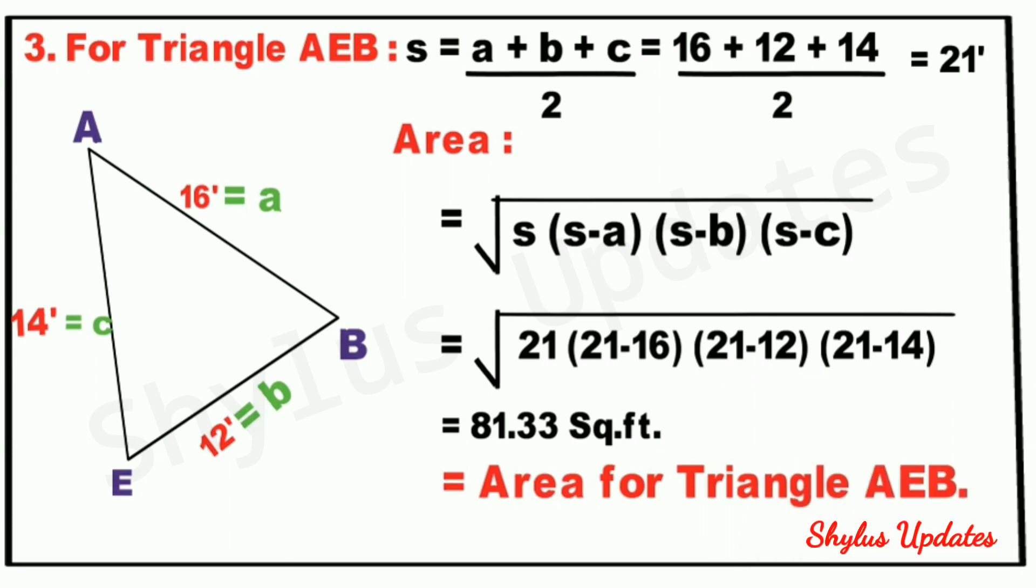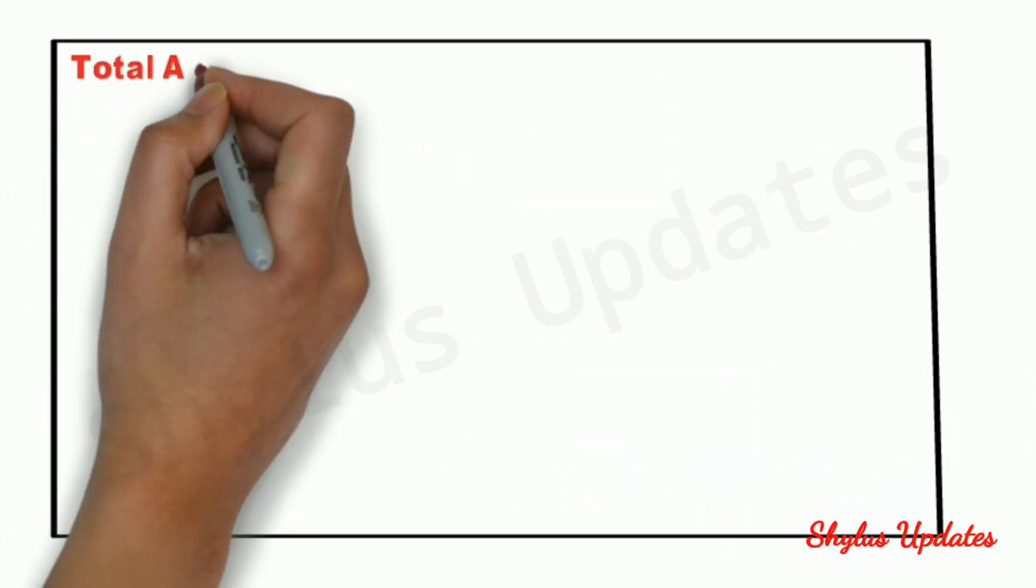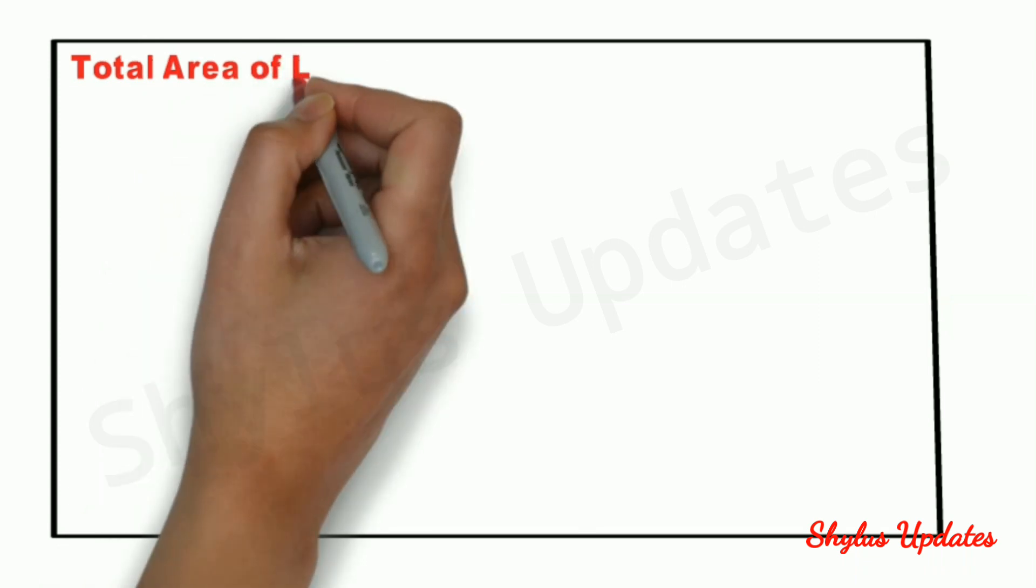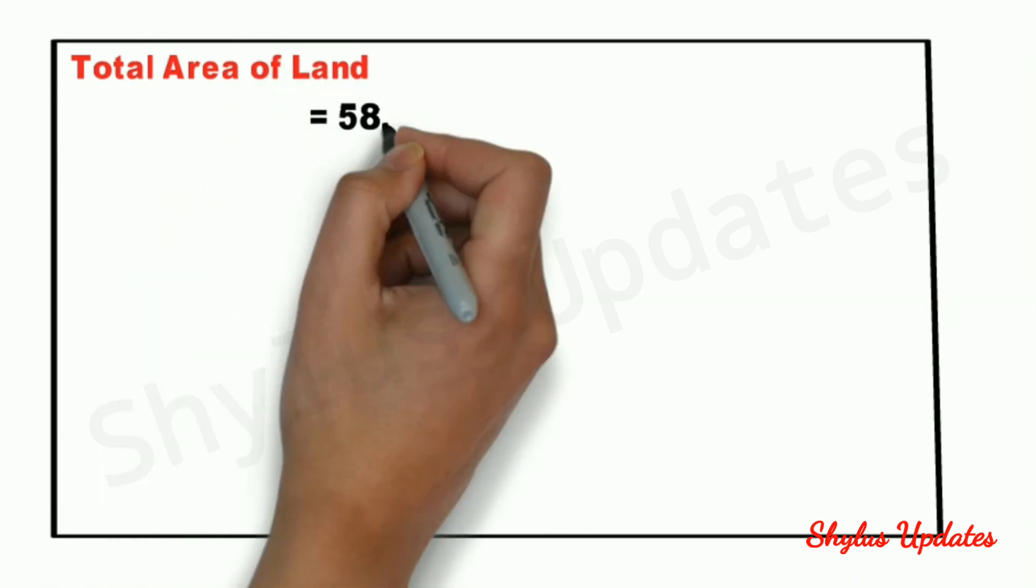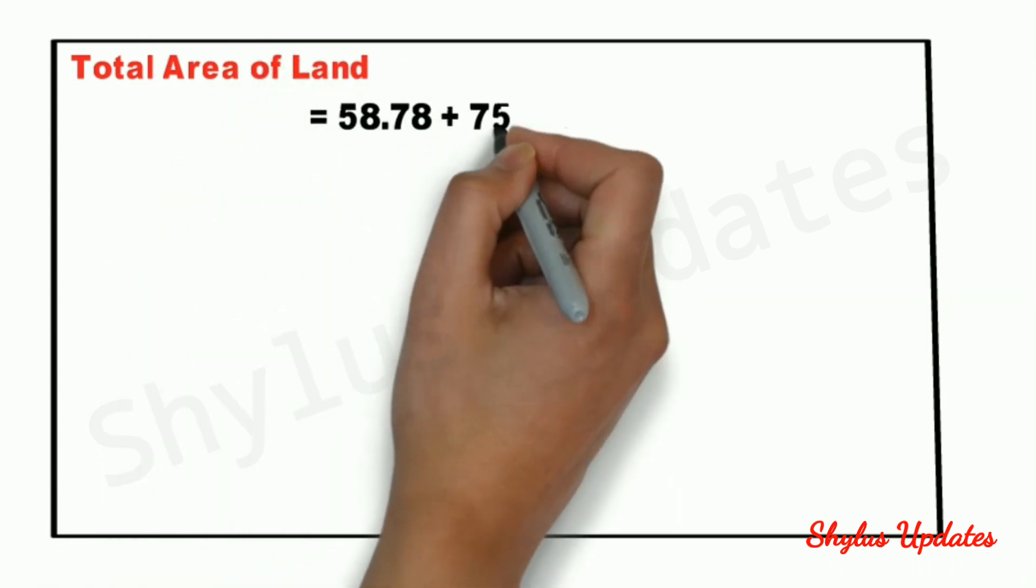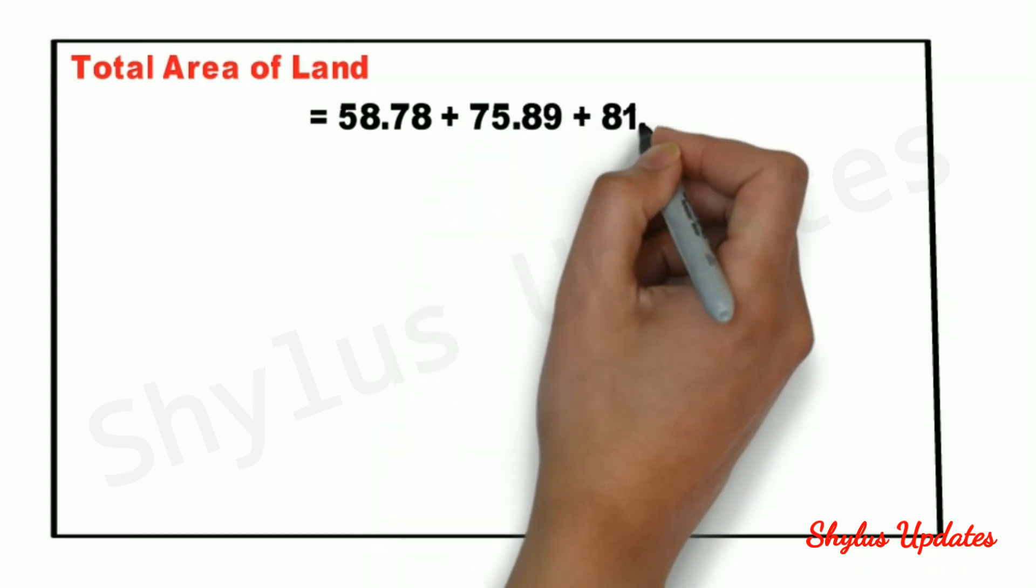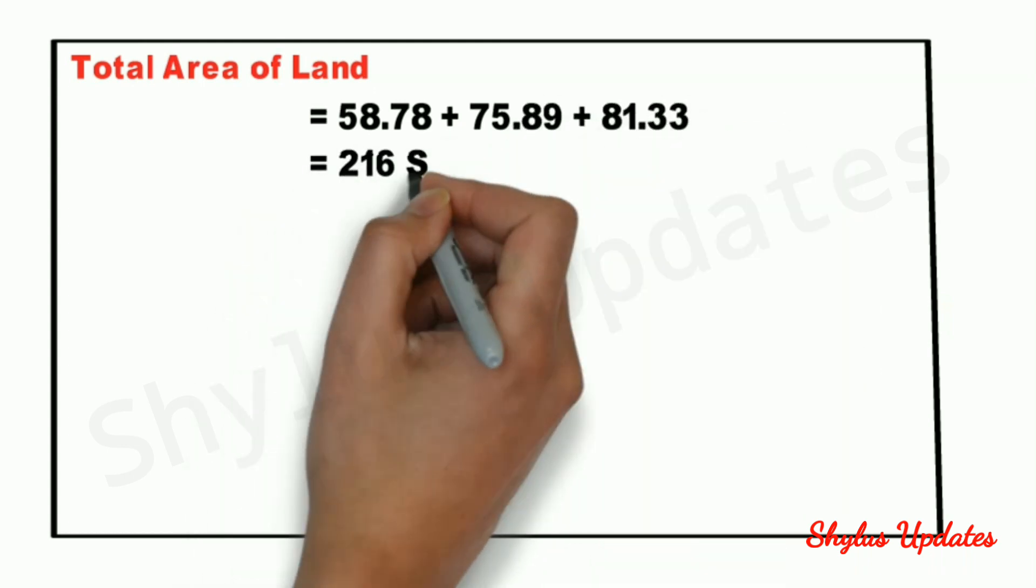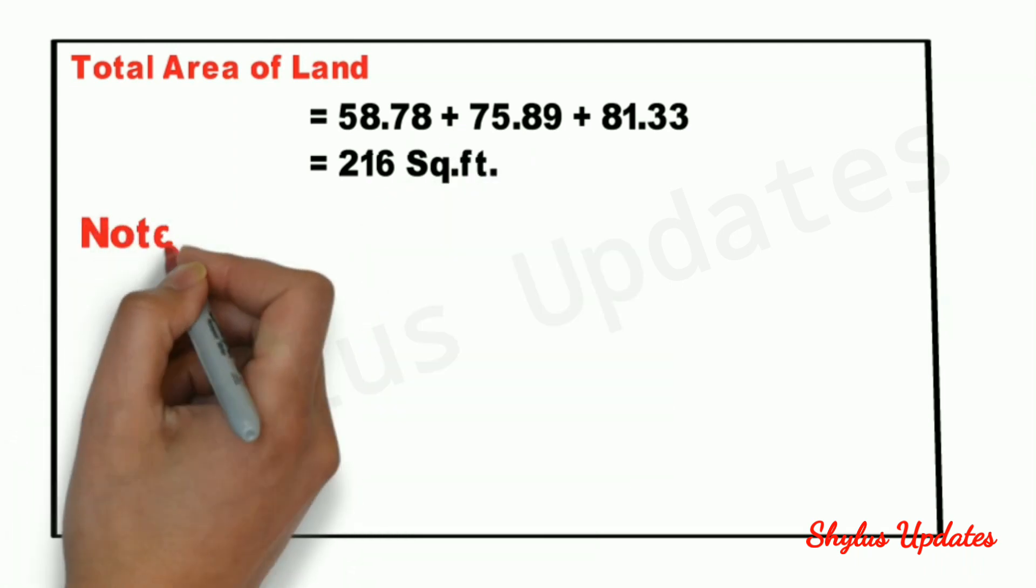Next, we have to find the total area. Total area of land equals 58.78 plus 75.89 plus 81.33, which equals 216 square feet.